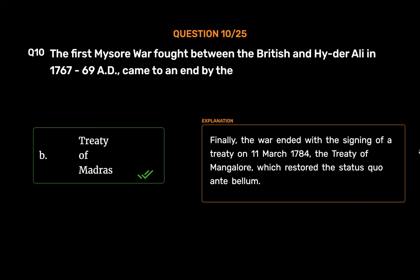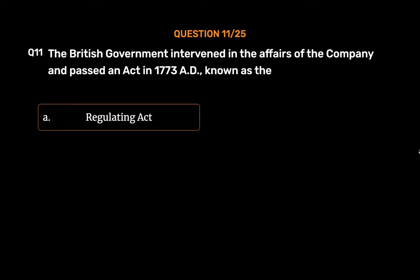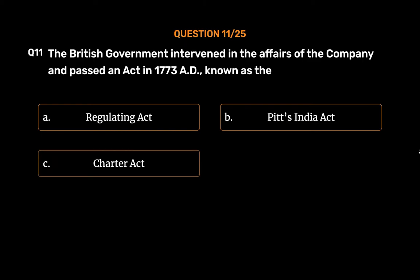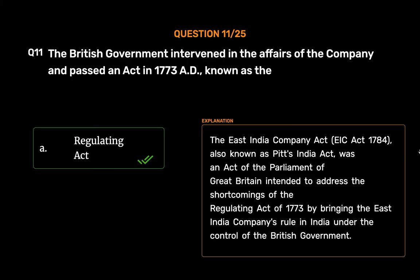Question No. 11: The British government intervened in the affairs of the company and passed an act in 1773 AD. The correct answer relates to the Pitt's India Act. The East India Company Act of 1784, also known as Pitt's India Act, was an act of the Parliament of Great Britain intended to address the shortcomings of the Regulating Act of 1773 by bringing the East India Company's rule in India under the control of the British government.